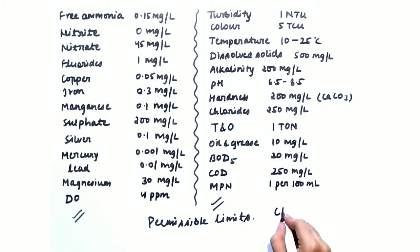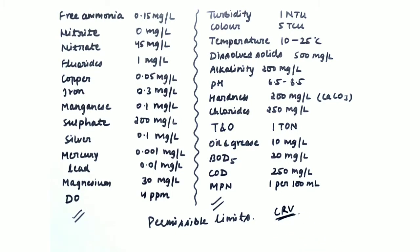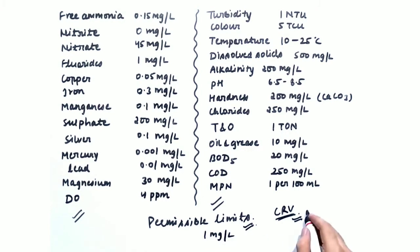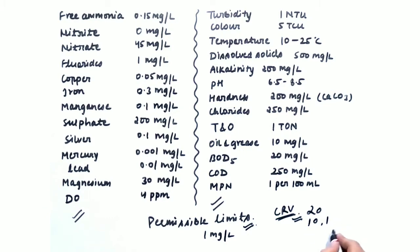There is one more term called CRV — Cause for Rejection Value. CRV is always greater than or equal to the permissible limit. For example, if the permissible limit for an element is 1 mg per liter, then CRV can be 20, 10, or 1, but it cannot be less than 1.